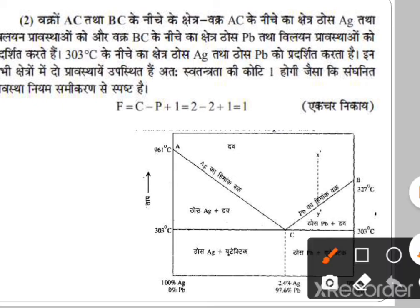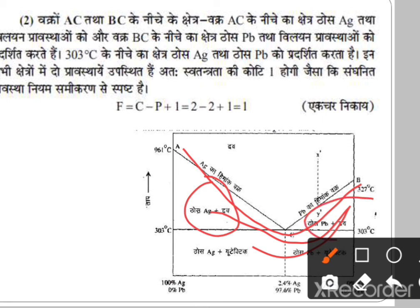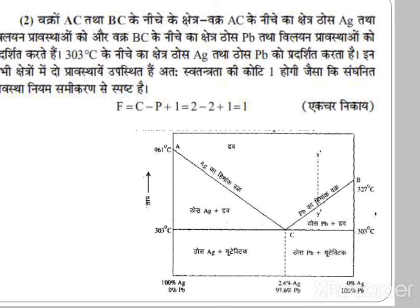Vakr AC tatha BC ke niche ka chetr: vakr AC ke niche ka chetr thos silver tatha vilayan awasthaon ka pratinidhitva karta hai. Vakr BC ke niche ka chetr thos lead ka pratinidhitva karta hai. 303°C ke niche ka chetr: solid silver plus eutectic mixture (left side) aur solid lead plus eutectic mixture (right side). In do-phase regions mein F equals 1 hoga.